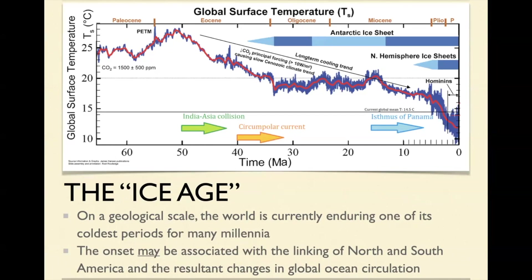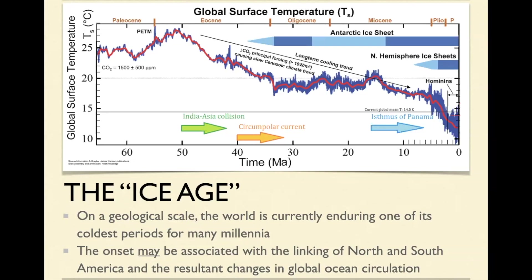In the last couple of million years, it's got a great deal colder again. It could be because around here the Isthmus of Panama — basically South America and North America joined — and so you couldn't get oceanic circulation going around there. Oceanic circulation patterns changed completely, and you start getting these much colder temperatures.